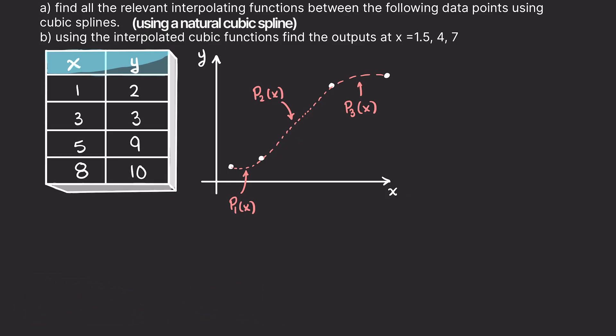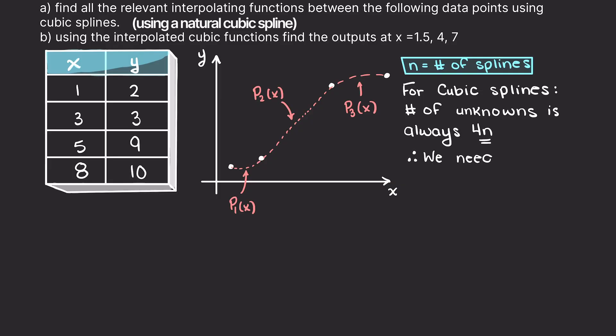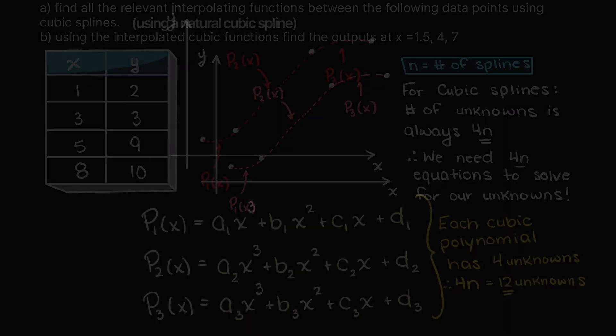As we learned in our cubic spline interpolation theory video, we know that we were always going to have one less spline than our number of supplied data points. Therefore, with four data points we will have three splines to fit cubic functions to. We also learned that for each spline we need to find, denoted by n, we will need 4n equations such that we can solve for our 4n missing coefficients. Therefore, we have 12 missing coefficients as you can see here.